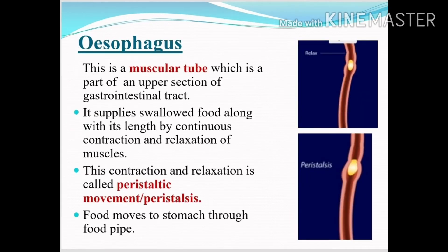From the mouth, food moves to the esophagus. The esophagus is a muscular tube which is part of the upper section of the gastrointestinal tract. It supplies swallowed food along its length by continuous contraction and relaxation of muscles. This continuous contraction and relaxation creates a movement called peristaltic movement, or peristalsis, by which the food moves to the stomach through the food pipe.